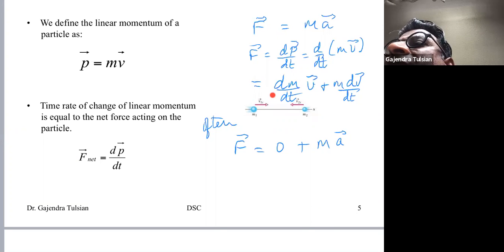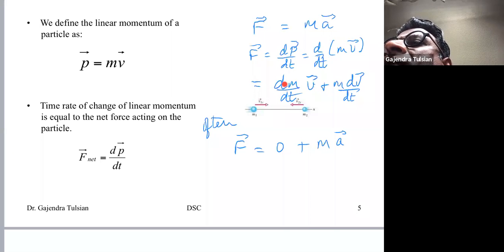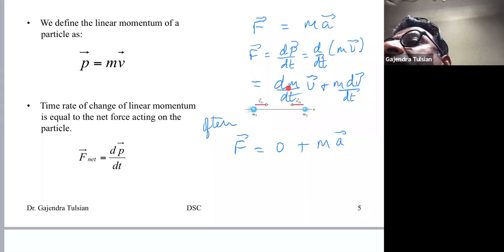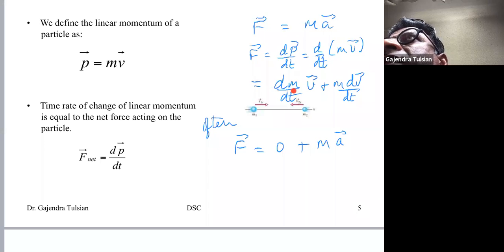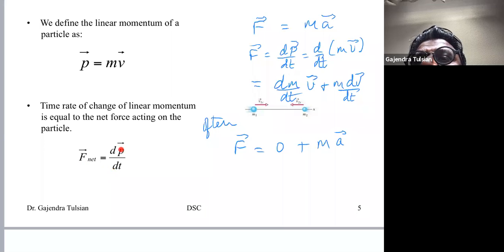Can anybody think of a situation where the mass changes? Yes — when you're losing fuel, like in a rocket. A rocket is mostly 90% fuel, so by the time the space shuttle gets to orbit — which only takes about eight minutes — it's lost 90% of its mass. In those situations, the dm/dt term is not zero and Newton's law would not be F = ma. That's why F = dP/dt is the most general form of Newton's second law.